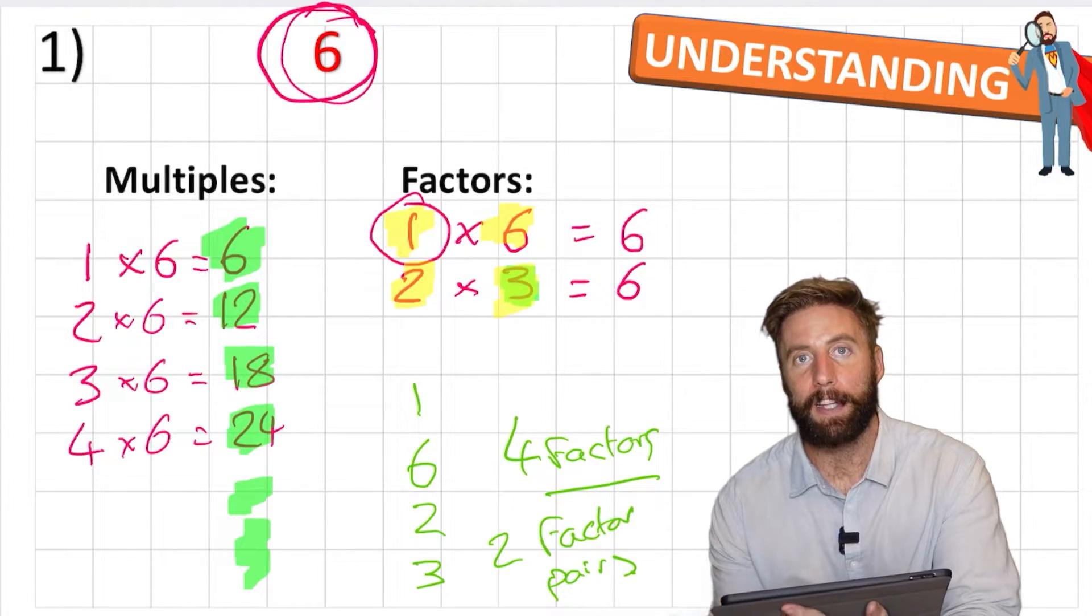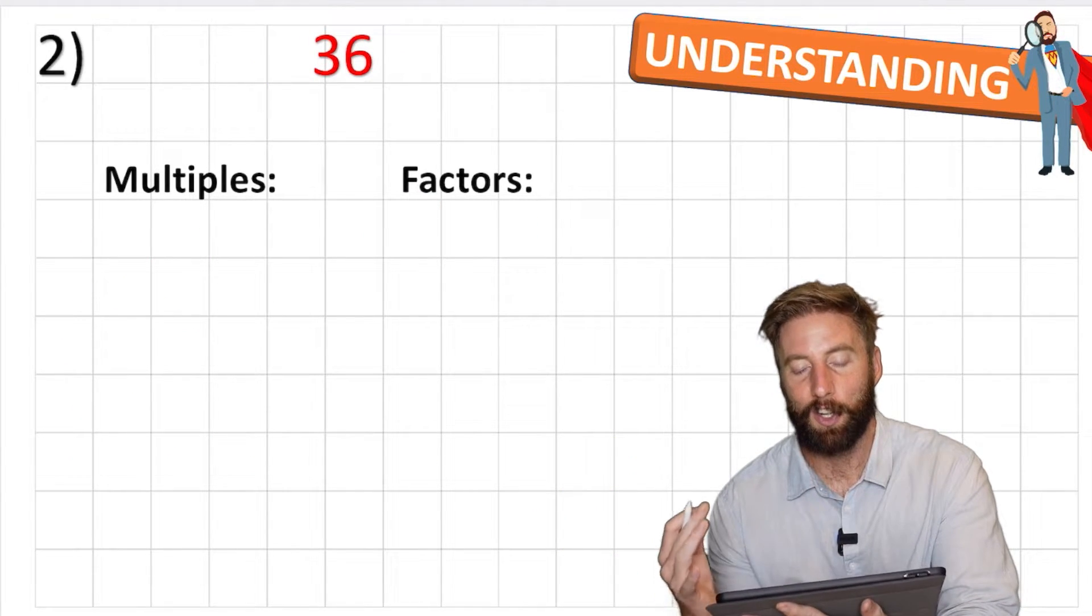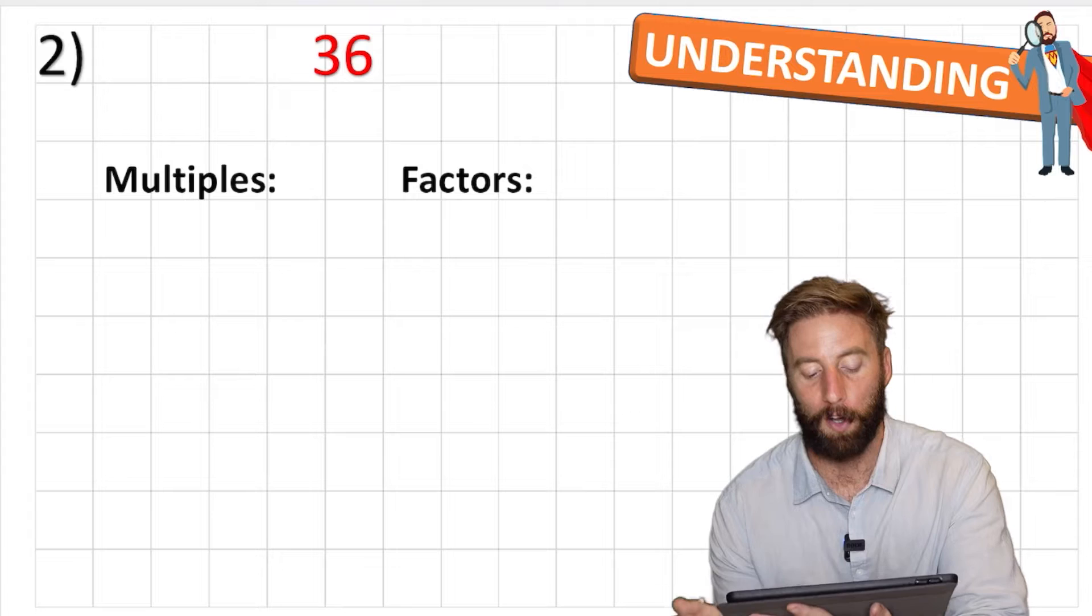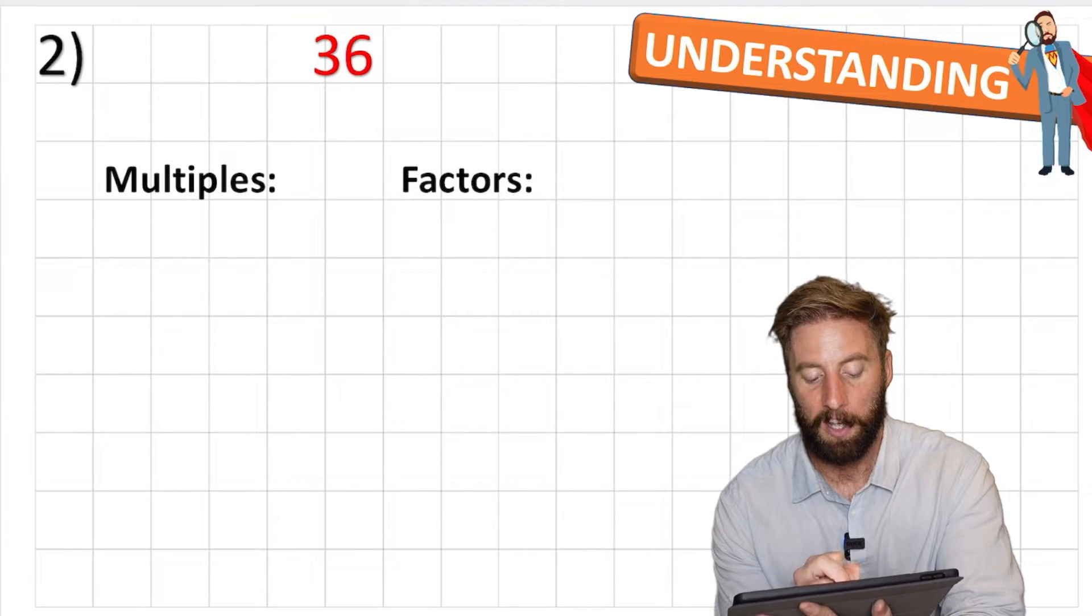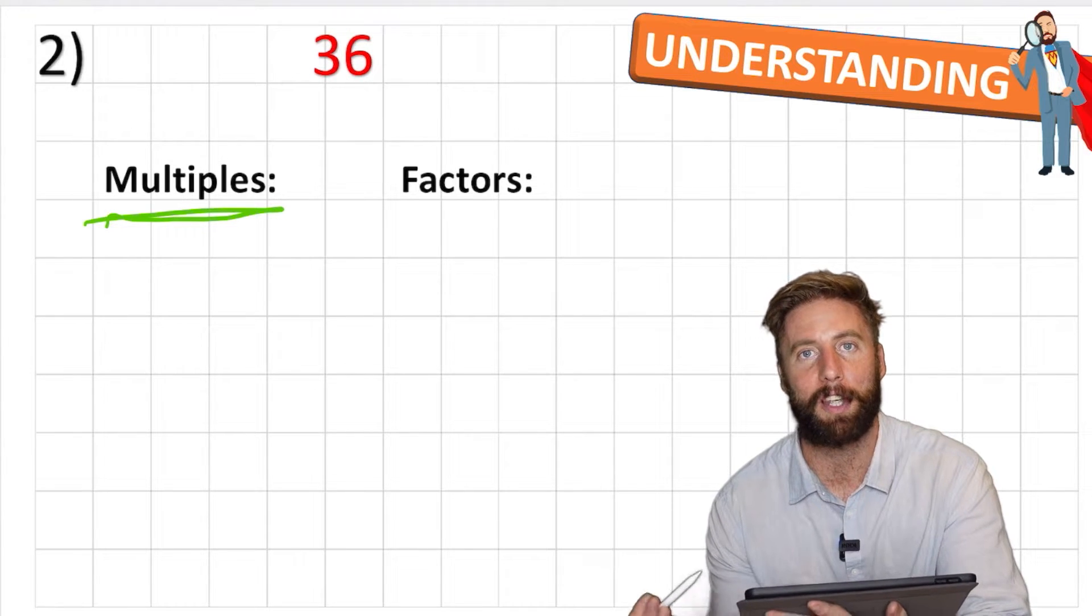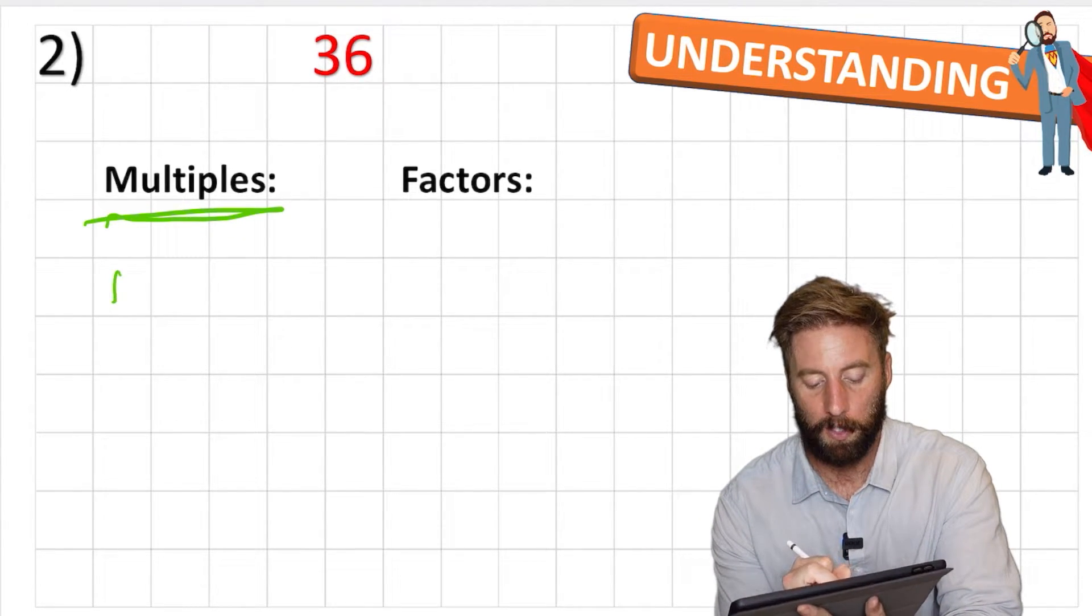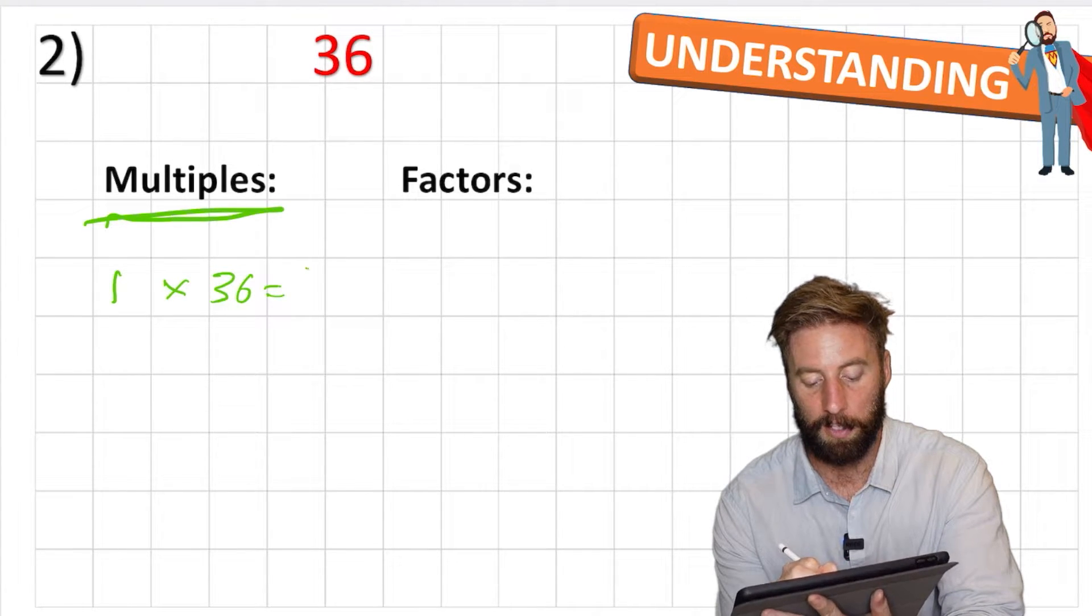Good. Okay, let's have a look at a difficult one. Let's have a look at 36. So this one immediately is much harder when we're looking at the multiples, because how do I work out the multiples of 36? Well, I can simply just keep adding 36 if I wanted to. So here we go. 1 times 36 equals 36.